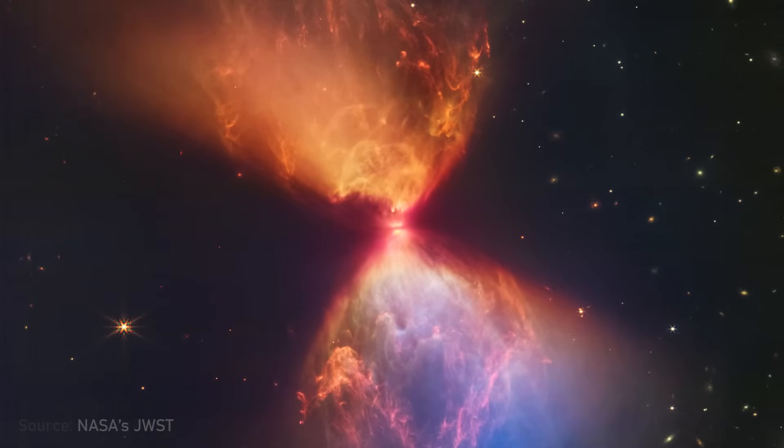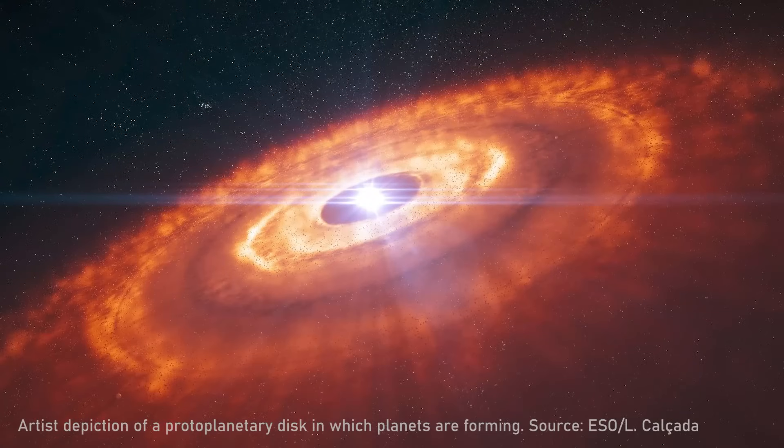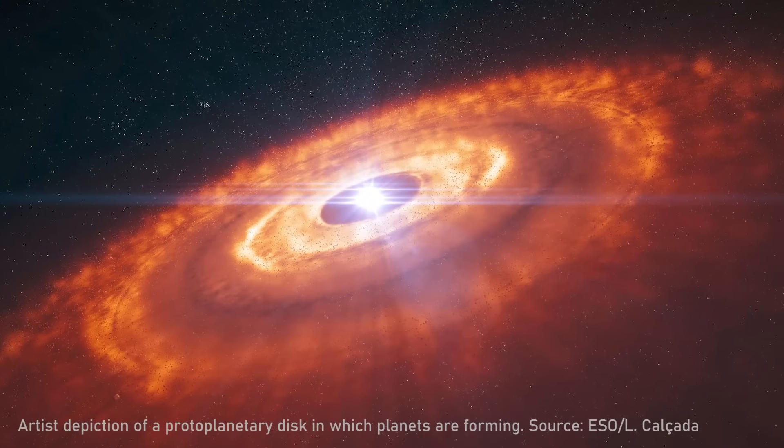A protostar is basically the young star — a ball of gas where nuclear reactions are getting started. Because everything's rotating, as material falls inward it'll spin up and form a disc. Material will collect in what's called an accretion disc or a protoplanetary disc, and you can simulate all of that.